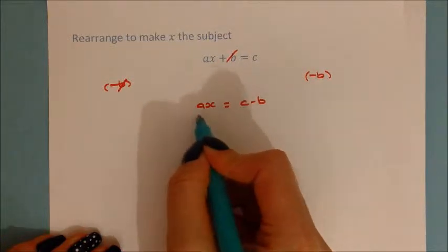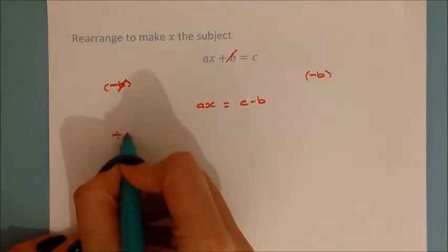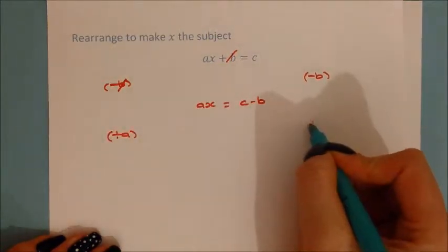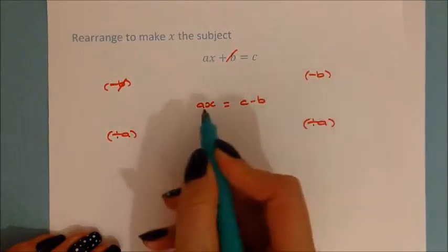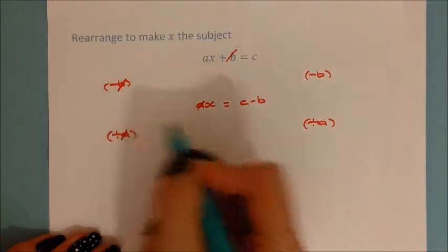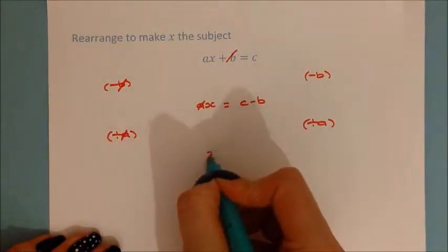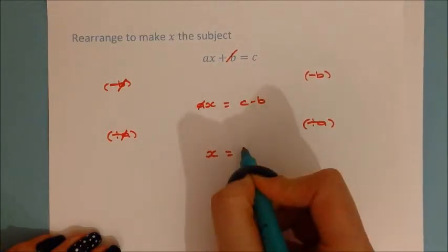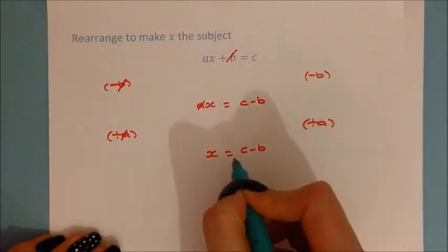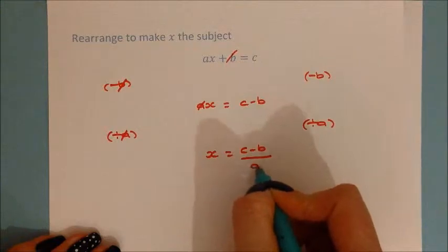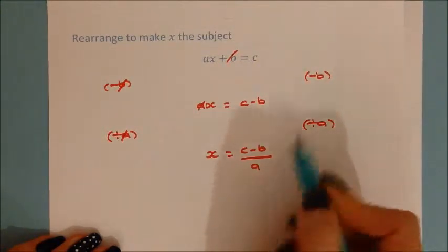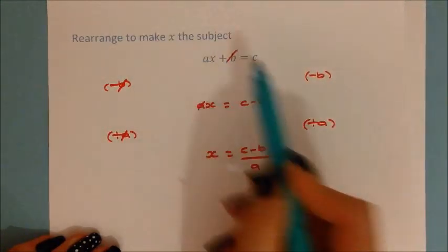We now want to get x on its own — it's been multiplied by a, so the inverse is to divide by a. Dividing both sides by a: this cancels out, leaving x equals c minus b, all divided by a. And now you've rearranged the formula to make x the subject.